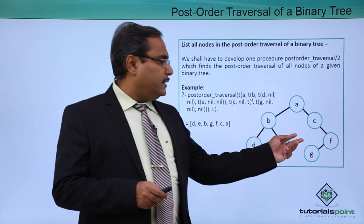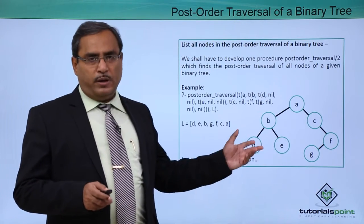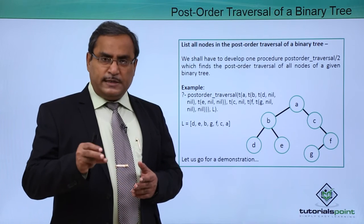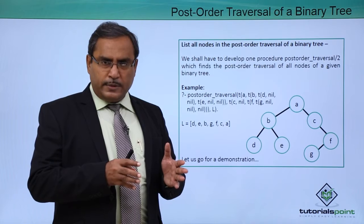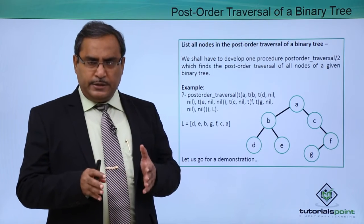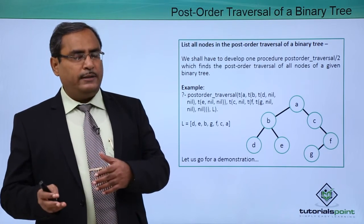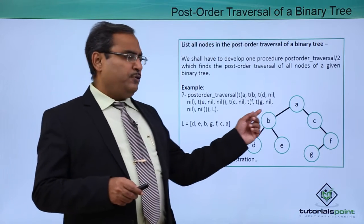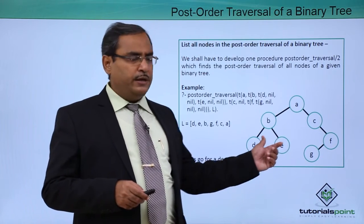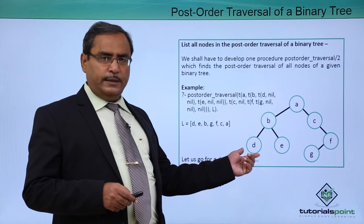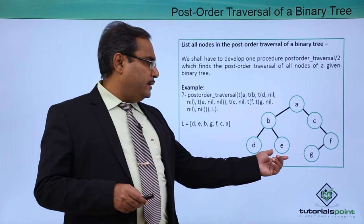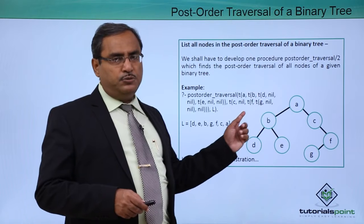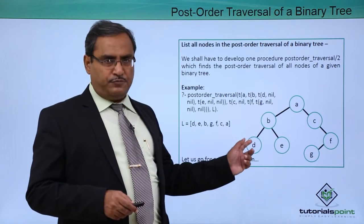Here is a sample binary tree. Postorder means we will be traversing in this way: left, right, and then root. Root will come at the last because it is postorder traversal. So if we traverse this tree, it will be D, E, then B — because I cannot start from A, I shall have to start from the left subtree.